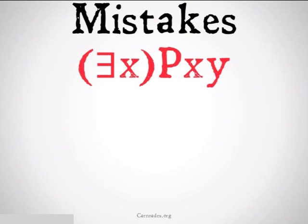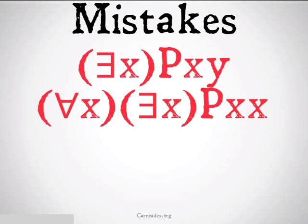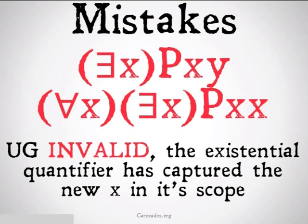Second common mistake: from 'there exists an X such that X bears relation P to Y,' trying to universally generalize to 'for all X, there exists an X such that X bears relation P to itself.' This is universal generalization — invalid. The existential quantifier has now captured the new X in its scope, double-quantifying it, which doesn't work. If you put in an example such as 'X is the parent of Y — there exists some X such that X is the parent of Y — for all X there exists some X such that X is the parent of itself,' it really doesn't seem to follow.